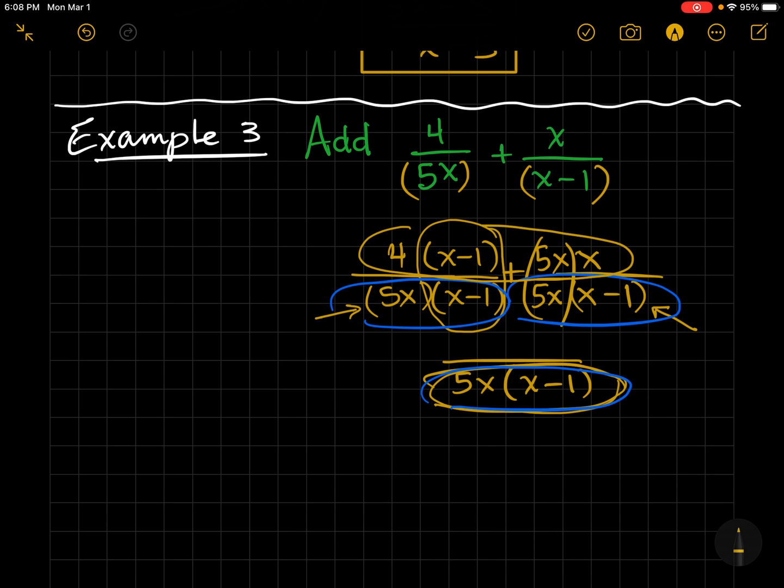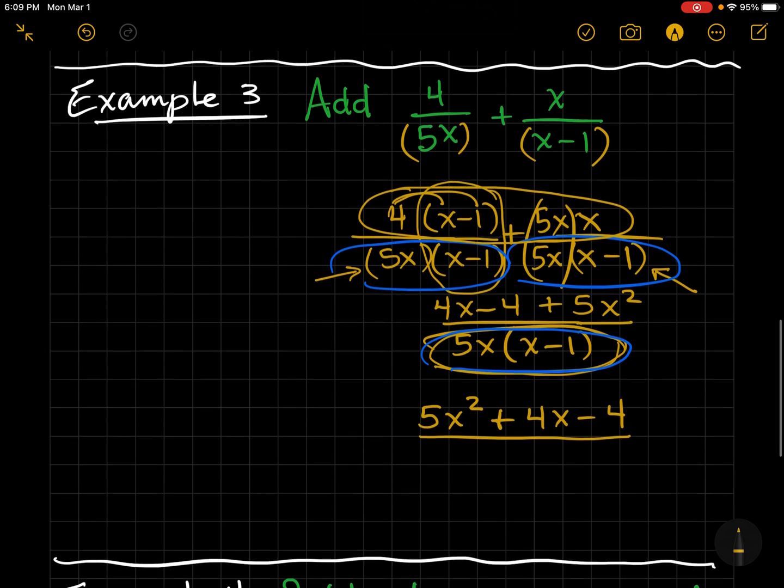So now, I'm going to proceed by adding the numerators, being careful to distribute when necessary. So I have 4x minus 4 plus 5x squared. So now, I simply need to simplify. Starting with the highest, I'm going to start with the 5x squared plus 4x minus 4. And it's already simplified. I didn't even have to combine like terms.